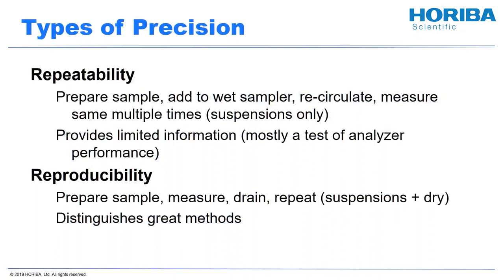A little more on types of precision. For repeatability: if I prepare a sample and I have a liquid system that lets me recirculate, I add it to my laser diffraction analyzer, recirculate, and hit measure multiple times. You should have the same result multiple times in a row. That's very reassuring and an important step, but it does provide limited information — it tells you about your analyzer performance and whether your suspension will be stable in the instrument for a few minutes. Once you get through repeatability, the next question is reproducibility. You take a bucket of material, prepare a sample, measure it, drain the system, and repeat everything from the beginning with fresh liquid, fresh dispersant, and another lot of sample from your bucket. Reproducibility — getting the same answer time after time from a bucket of material — is really what distinguishes a great method.